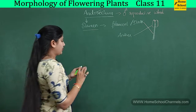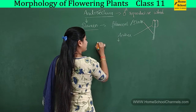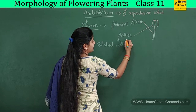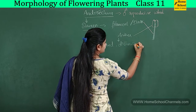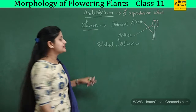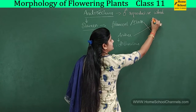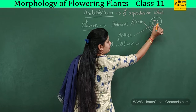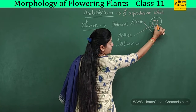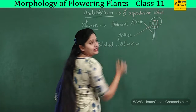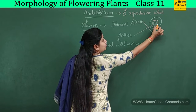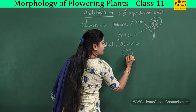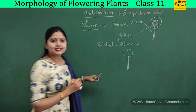The anther is bilobed and dithecous. Dithecous means there are two thecae. Looking at the anther, one part is the first theca and the other part is the second theca. Because there are two thecae, we call it a dithecous anther.